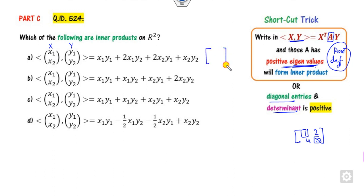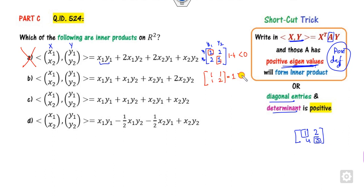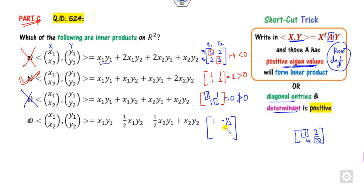Let us do this for each option. For the first option, write the matrix: x1·x2 coefficient is 1, x1·y2 coefficient is 2, giving the matrix [1, 2; 2, 1]. The diagonal entries are positive, but the determinant is less than 0 — so this is a wrong answer. For the next option, the matrix is [1, 1; 1, 2]: diagonals are positive and the determinant is 1, which is positive — so this is a right answer. For the option with matrix [1, 1; 1, 1]: diagonal entries are positive but the determinant is 0, which is not greater than 0 — cancelled. For the last option, the matrix is [1, -1/2; -1/2, 1]: diagonals are positive and the determinant is 1 minus 1/4, which is 3/4 — positive. So the right answers are B and D.